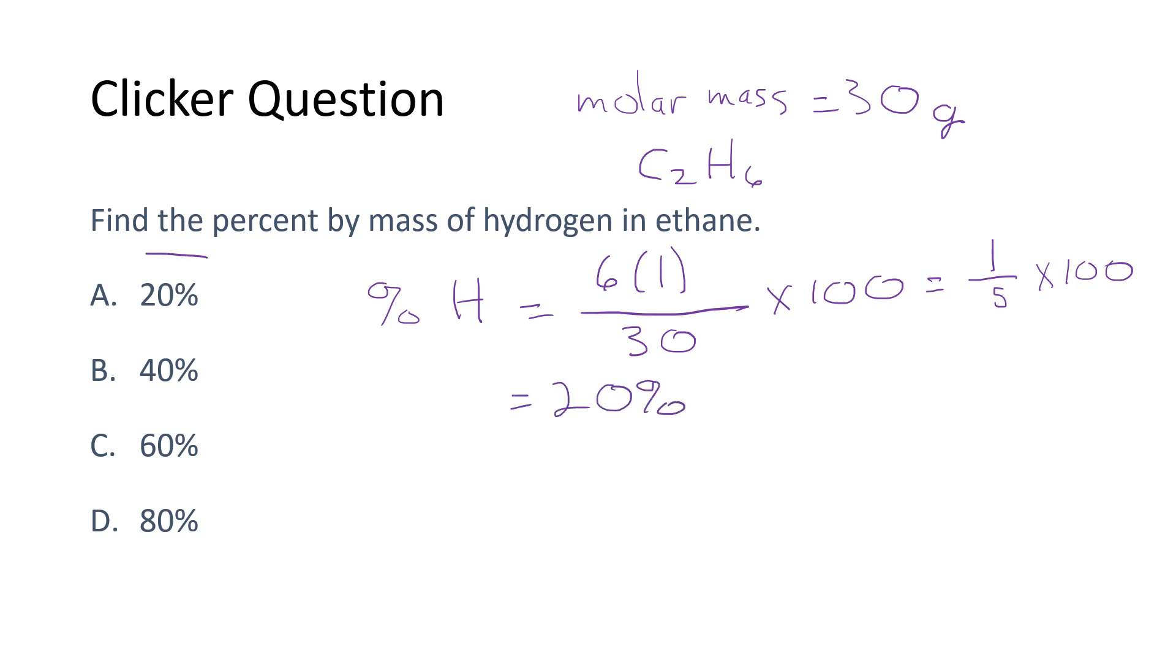Now, I bet a bunch of you already knew it was 20% without doing that calculation because you said, all right, there are two elements in ethane, carbon and hydrogen. And I know that ethane is 80% by mass carbon. So 100 minus 80 means it's 20% hydrogen. So either way that you do the calculation, you should end up with 20% hydrogen.